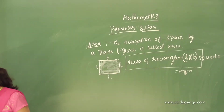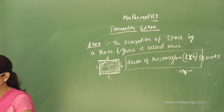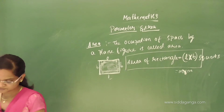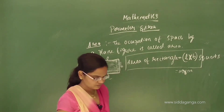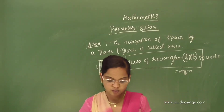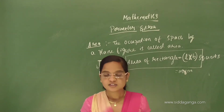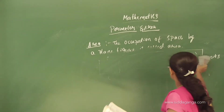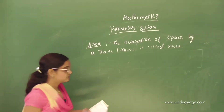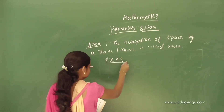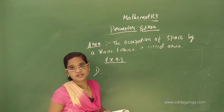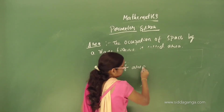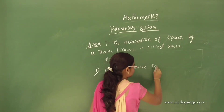So let's take some problems based on area. Let's discuss Exercise 9.3. Answer the following questions. First question: what is the unit of area? The unit of area is square units.